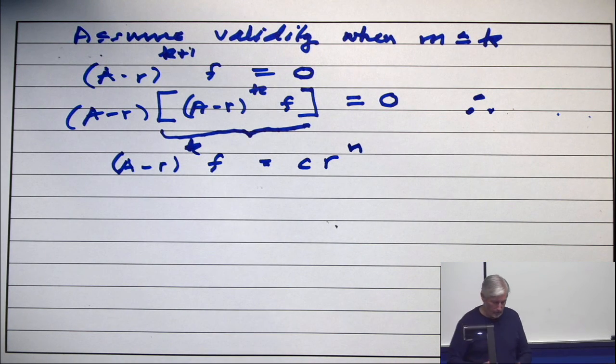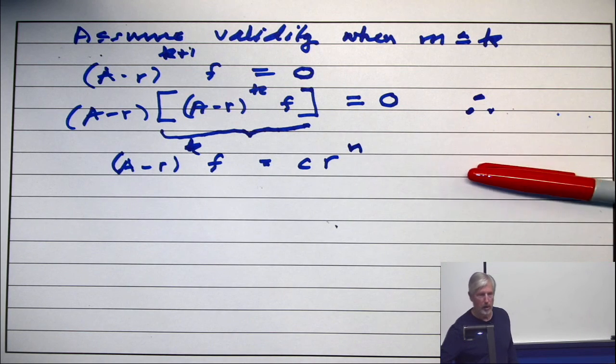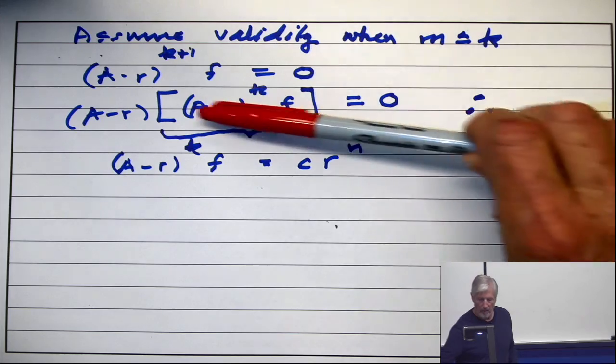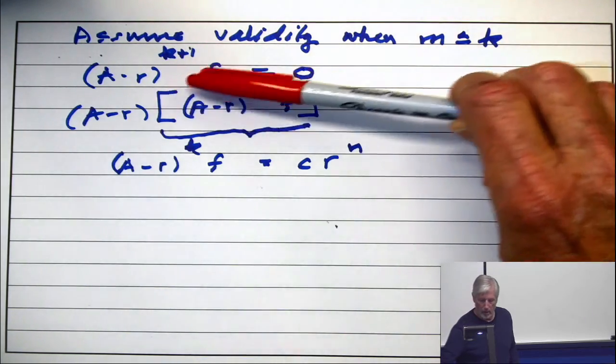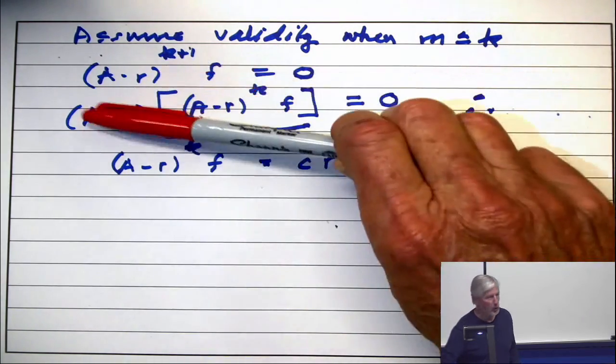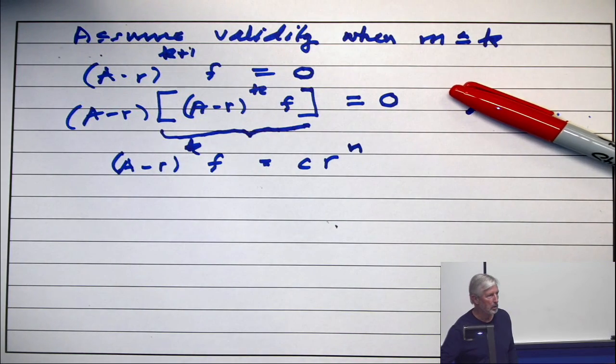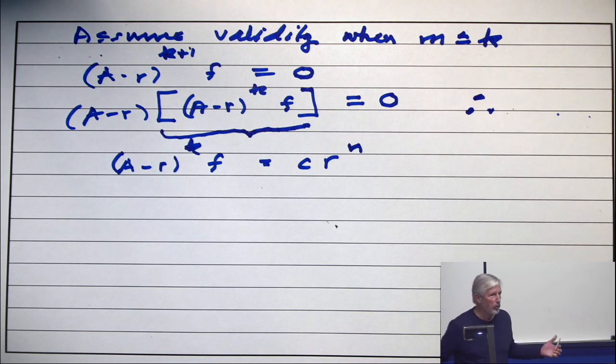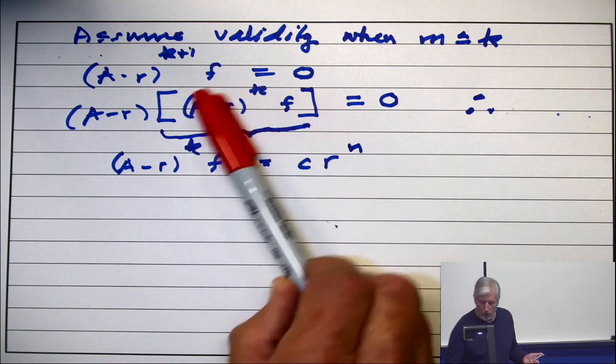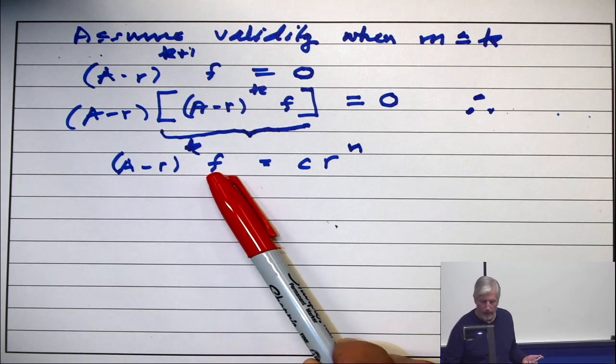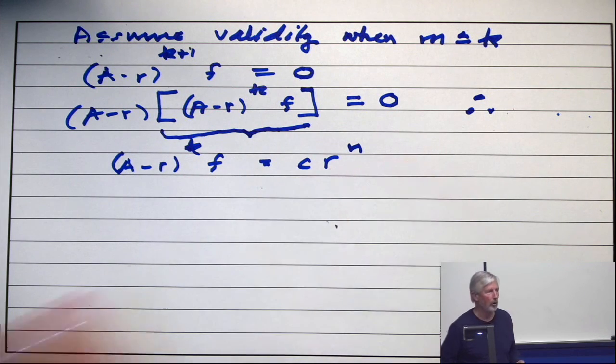Okay, now let's just think about that line. How did I go from here to here? I'm using that this is a solution to (a-r) operating on something is 0. And we know the answer to that. The answer is just a constant times r to the n. So that means this stuff, (a-r) to the k on f, has to be a constant times r to the n.